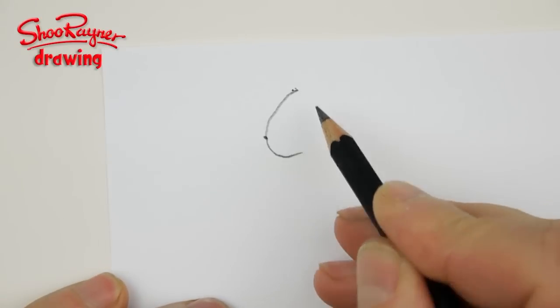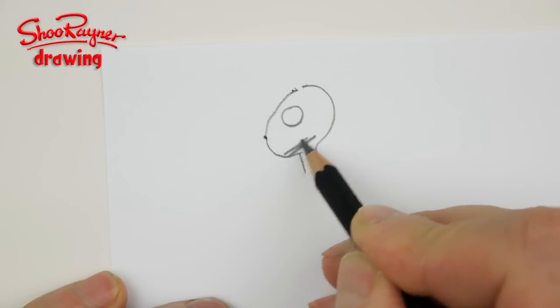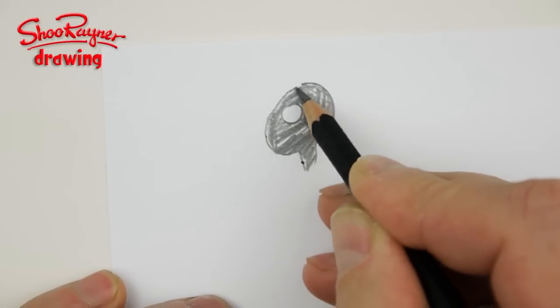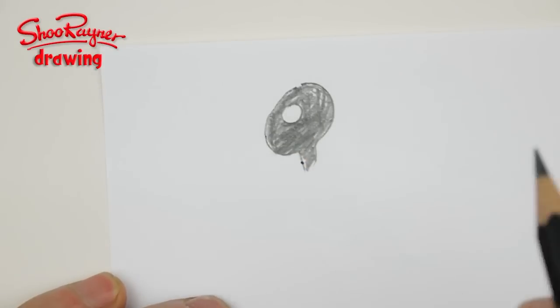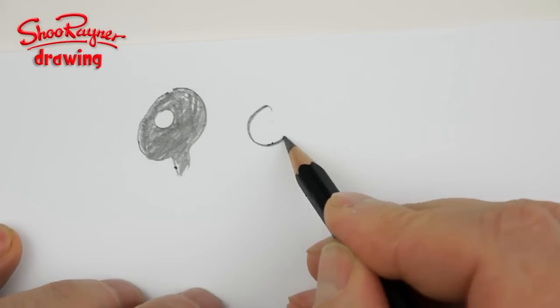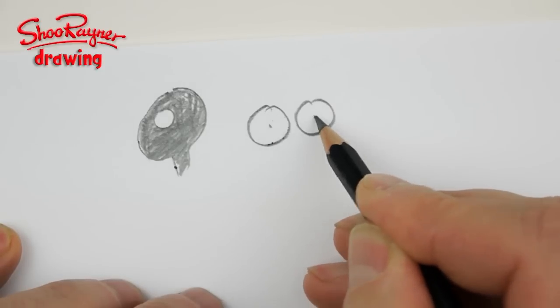The first cavemen drew really simple heads on the walls of their caves. If you're lucky, you might find one where a dot has been put in the middle of the circle for the eyeball. It doesn't take a giant leap to draw two circles with dots in the middle but we'll come back to that design later.